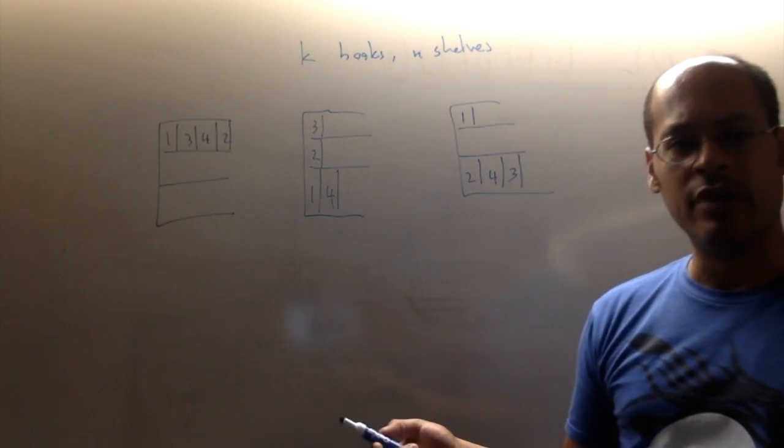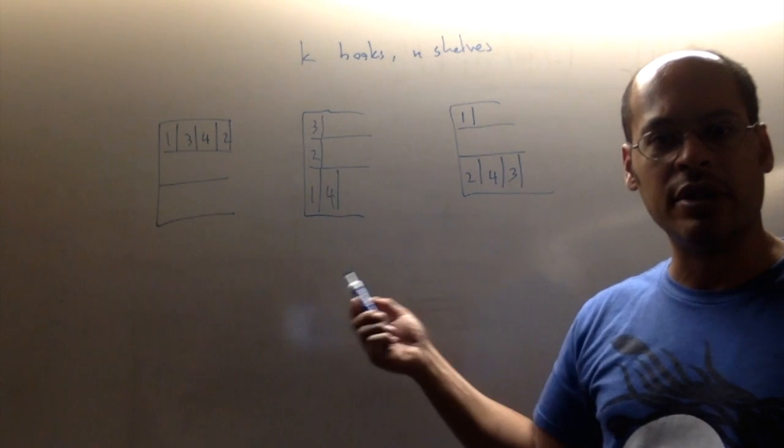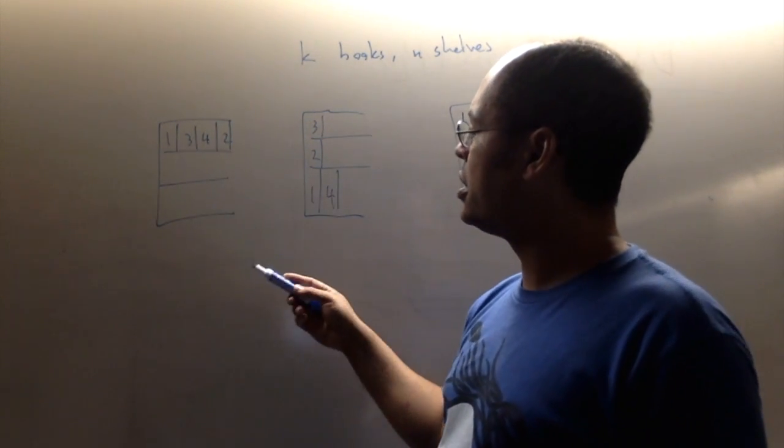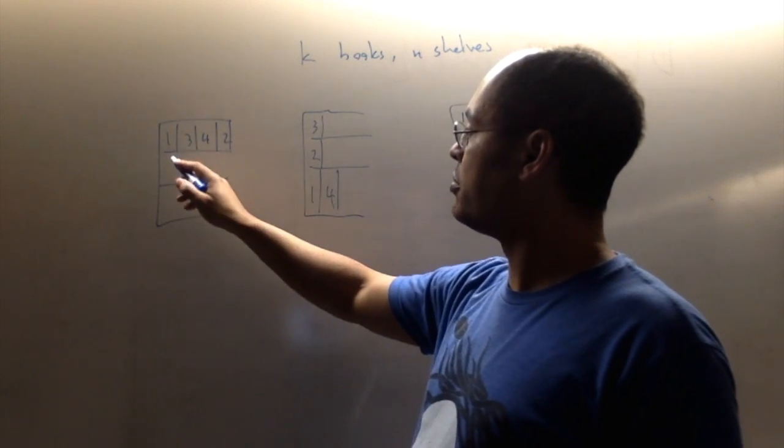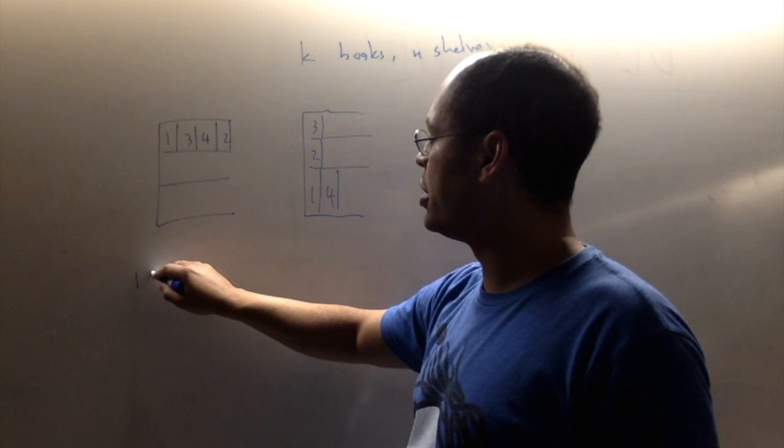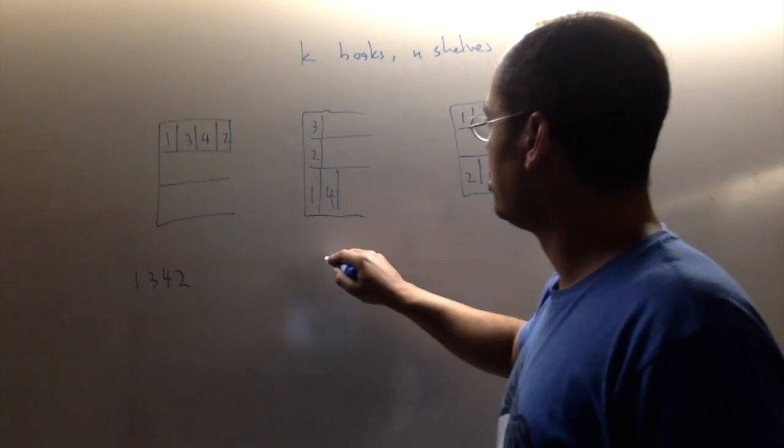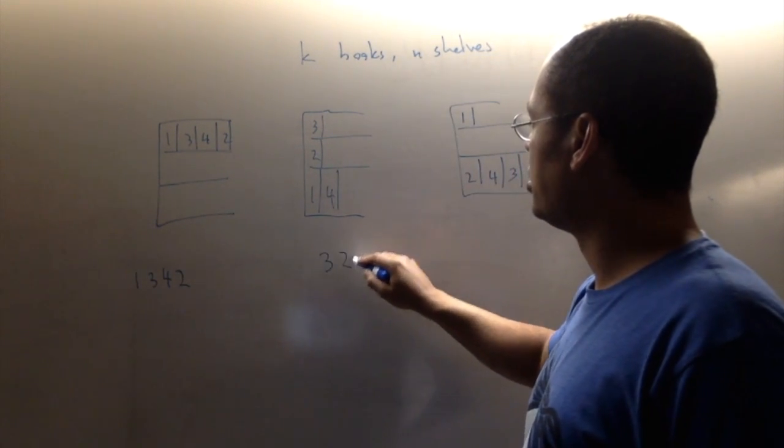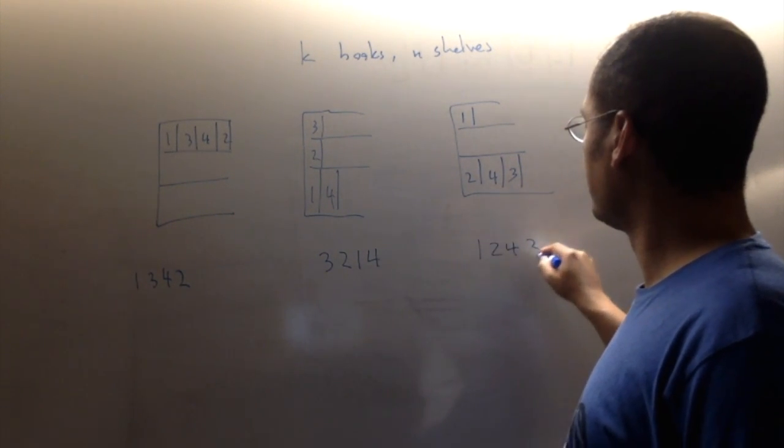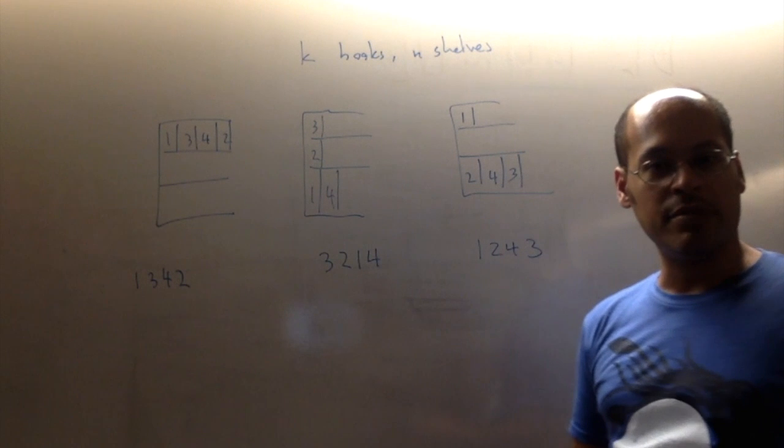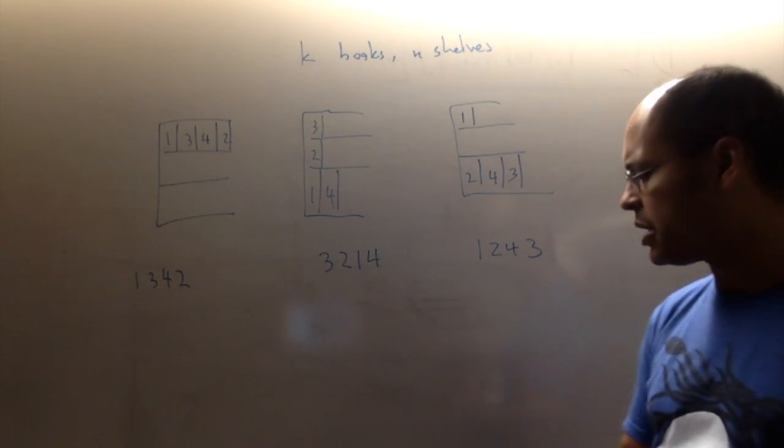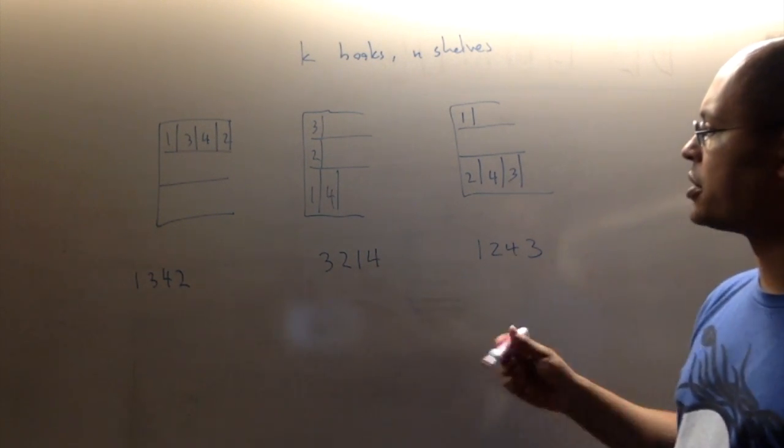Let me give you another way of notating these arrangements. So what I'm going to do is I'm just going to write the sequence of numbers, reading left to right, top to bottom. So that's the sequence in which the books are ordered. But that doesn't exactly tell you where all the books are on the shelves because I haven't said where the shelves go.